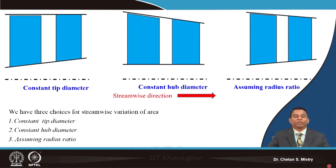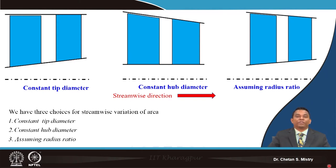Transonic compressors are mainly high pressure compressors, and the per-stage pressure ratio is very high. The flow coming out at the exit will have higher pressure and thus higher density. To satisfy the continuity equation assuming constant axial velocity, the exit area will be lower. We discussed three configurations: constant tip diameter, constant hub diameter, and assuming some radius ratio.